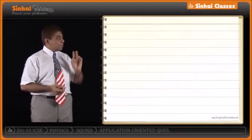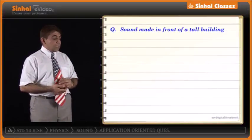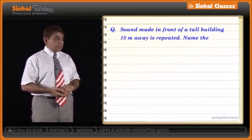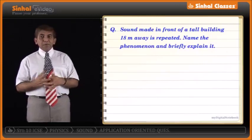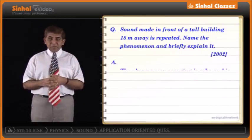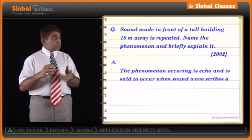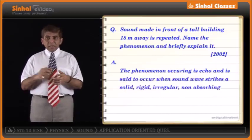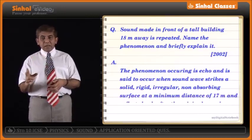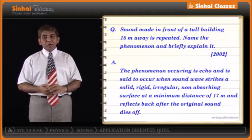Sound made in front of a tall building 18 meters away is repeated. The phenomenon occurring when sound is repeated after covering a minimum distance of 18 meters is called echo. Echo is the reflection of sound heard after sound waves strike a solid rigid obstacle placed at a minimum distance of 17 meters, such that the sound persists in the ear for 0.1 second.